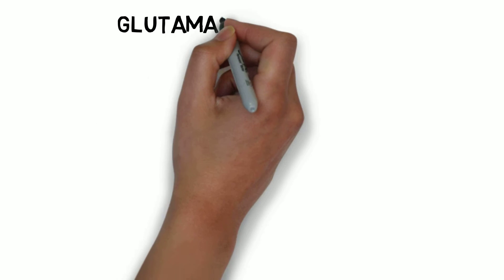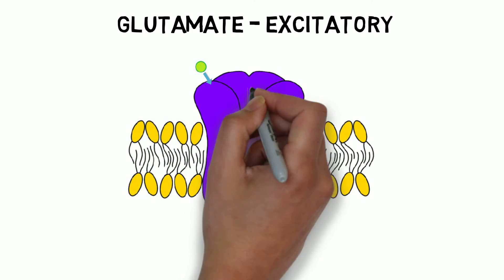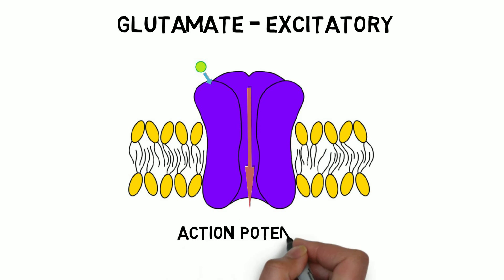Glutamate generally has excitatory actions, meaning that when it interacts with the receptors of a neuron, it makes that neuron more likely to fire an action potential. It is, in fact, used at the vast majority of excitatory connections in the brain, and at more than half of all synapses in the brain.